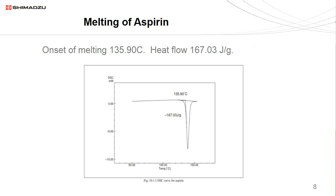Here's the most common application for DSC: measuring melting temperature. For this example we have a melting of aspirin. Melting is usually taken as the onset — in this case the onset of melting is 135.9°C for aspirin. The heat flow, or the energy required to heat the material to this phase, is 167.03 joules per gram.